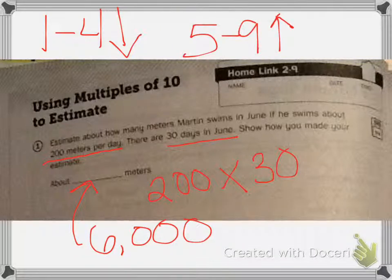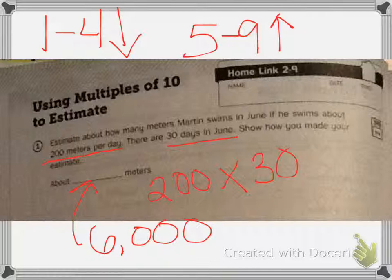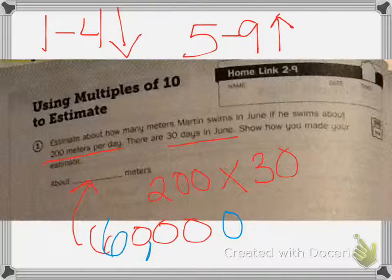This is a short and sweet video. For the bottom part, you have 200 meters a day and 30 days in June — that gives you 6,000. So now we need to figure out how to get to 60,000 meters. That's adding one more zero. Add a zero and erase — how do I get to 60,000 meters when I'm going 200 meters a day? Good luck.